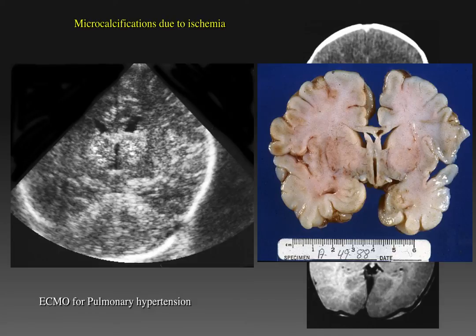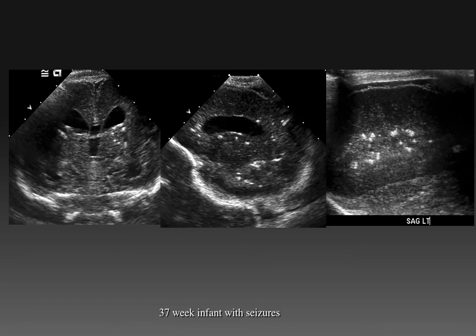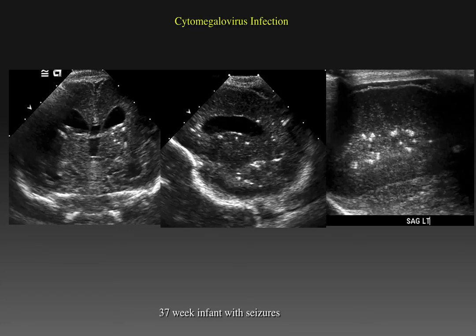Microcalcifications can occur secondary to ischemia after one to several weeks post-insult and can result in diffuse and even focal echogenic lesions throughout the deep white matter. The other pattern of calcifications is seen in this child who is 37 weeks and presents with seizures. In addition to multiple coarse calcifications in the periventricular white matter, this infant has very limited sulcation despite being near term. This child had been infected with cytomegalovirus during pregnancy, and these focal calcifications represent secondary granuloma formation from the CMV infection.